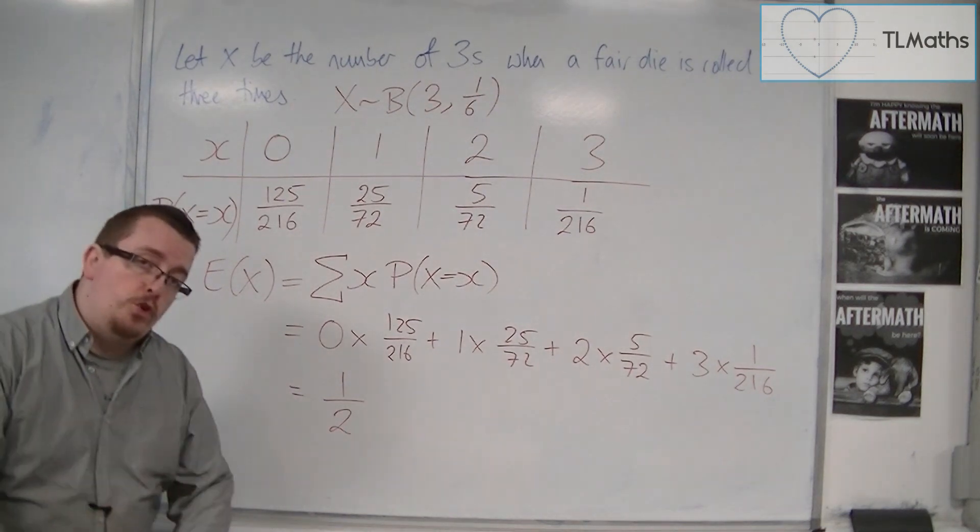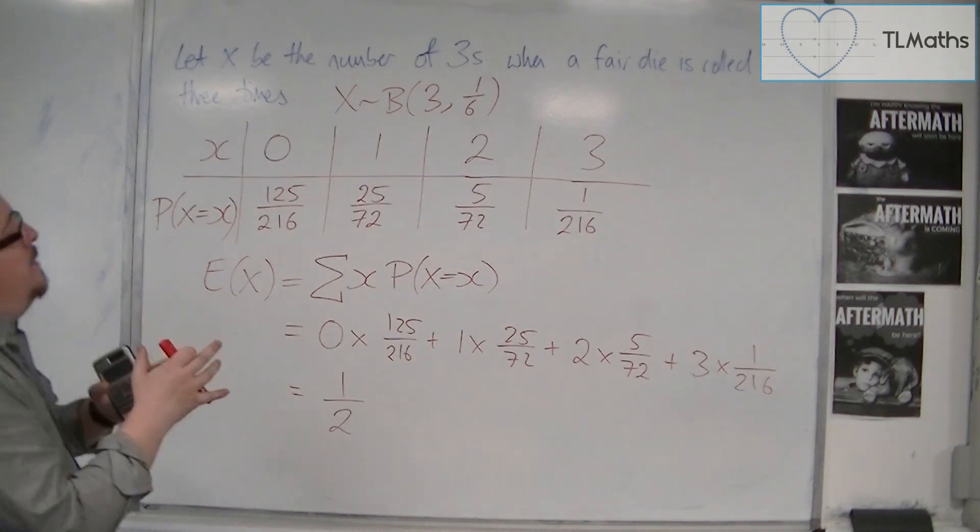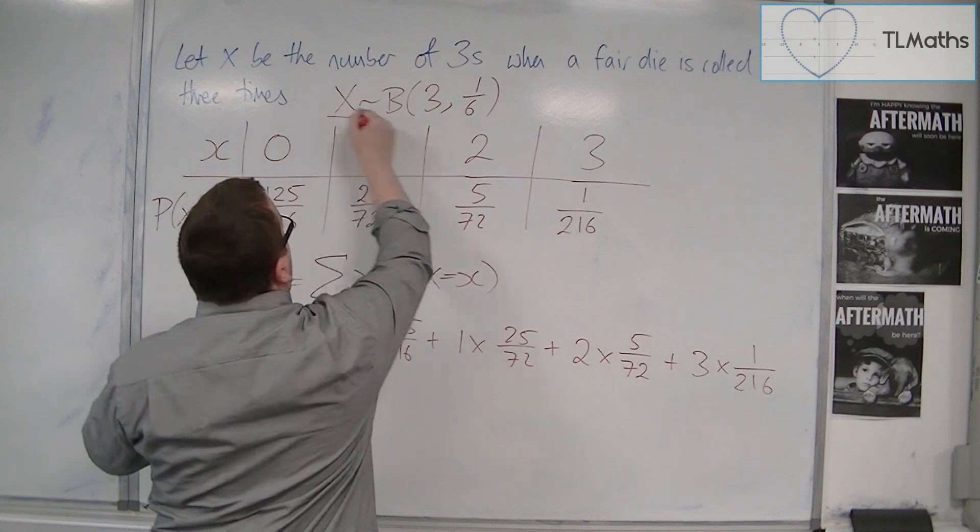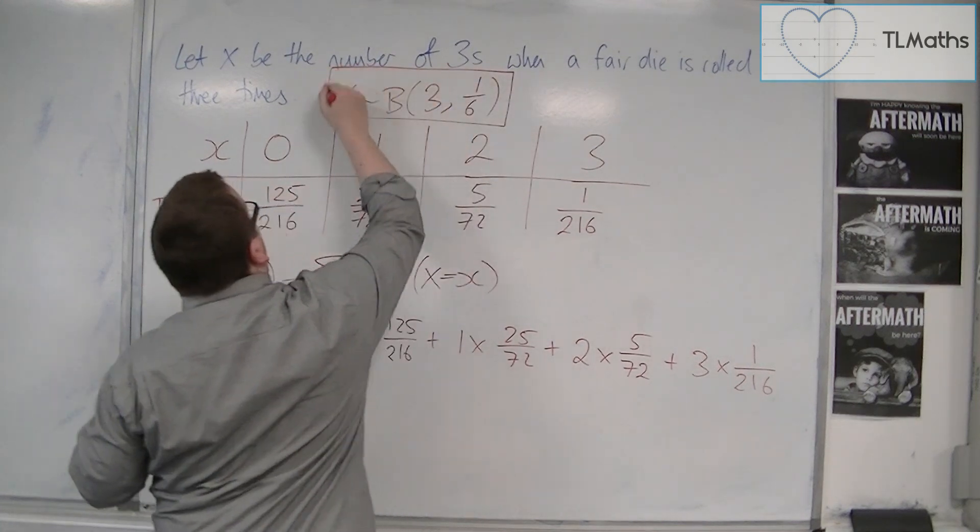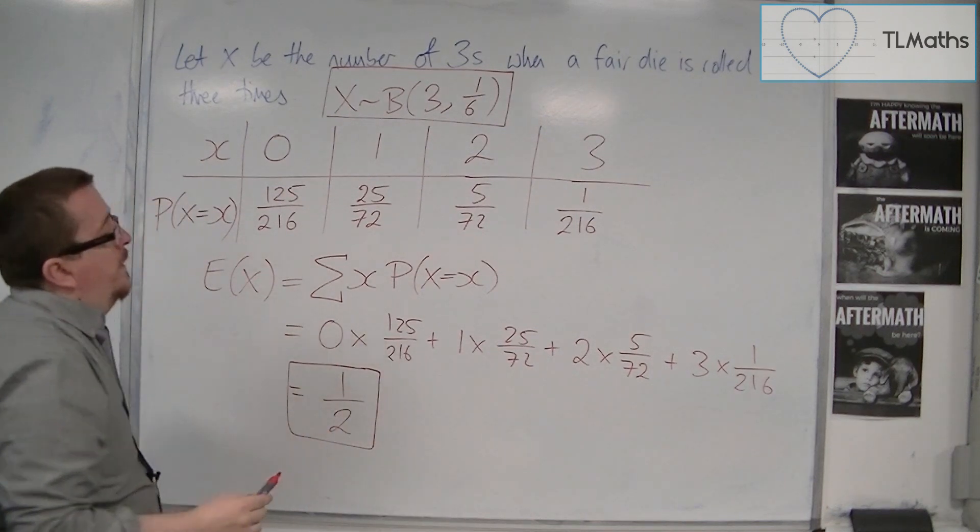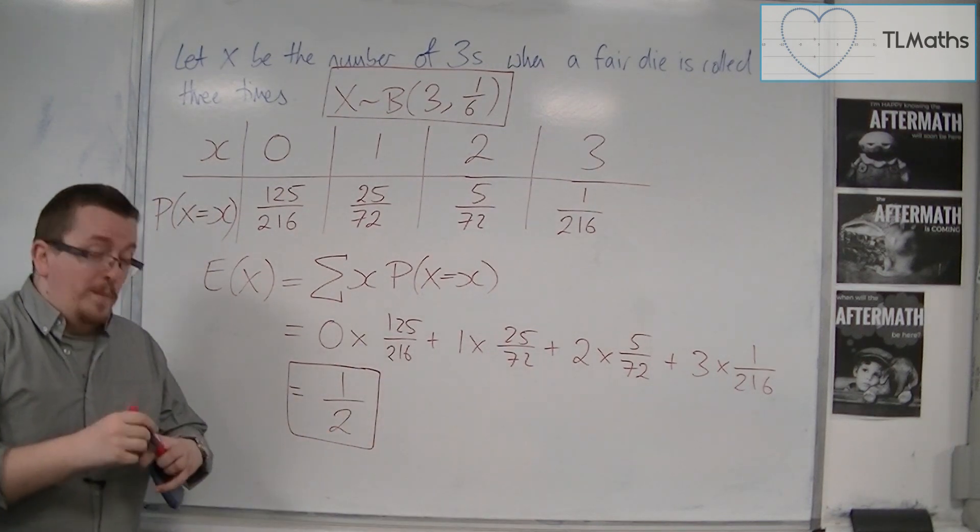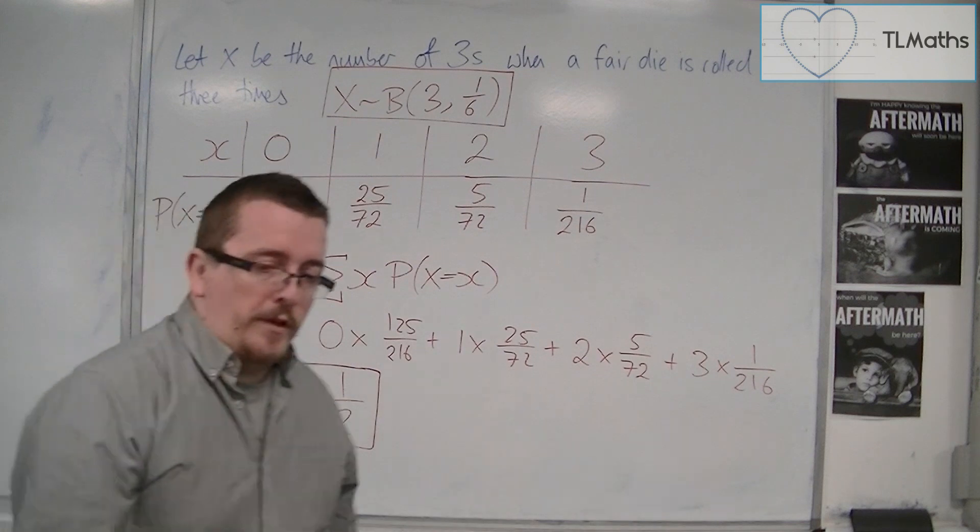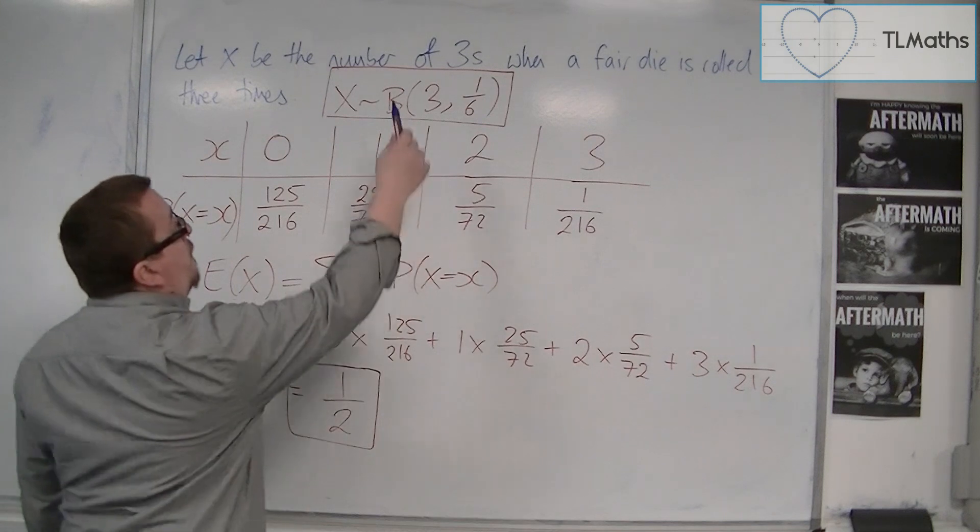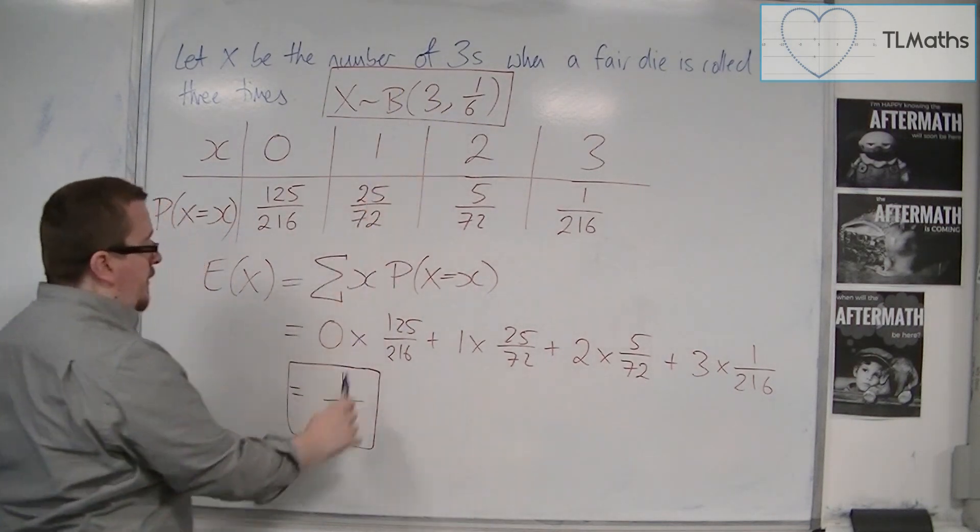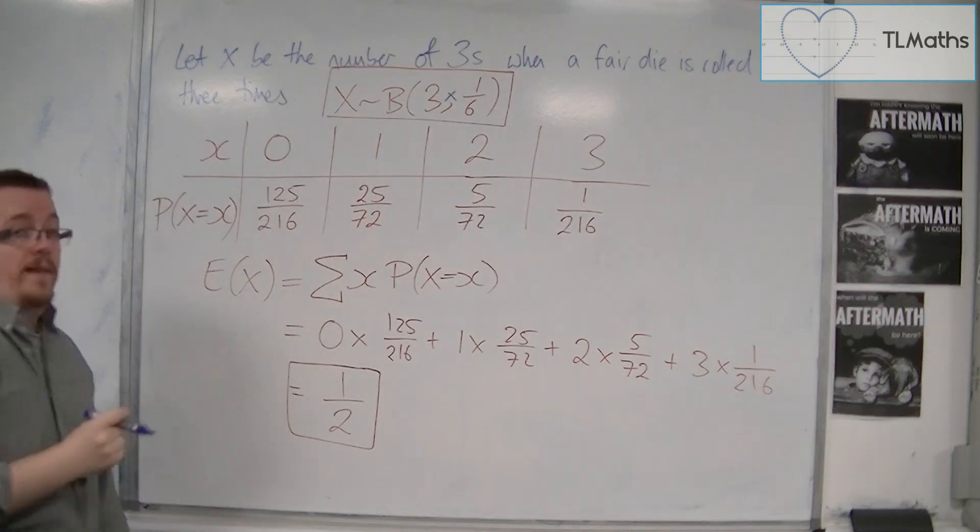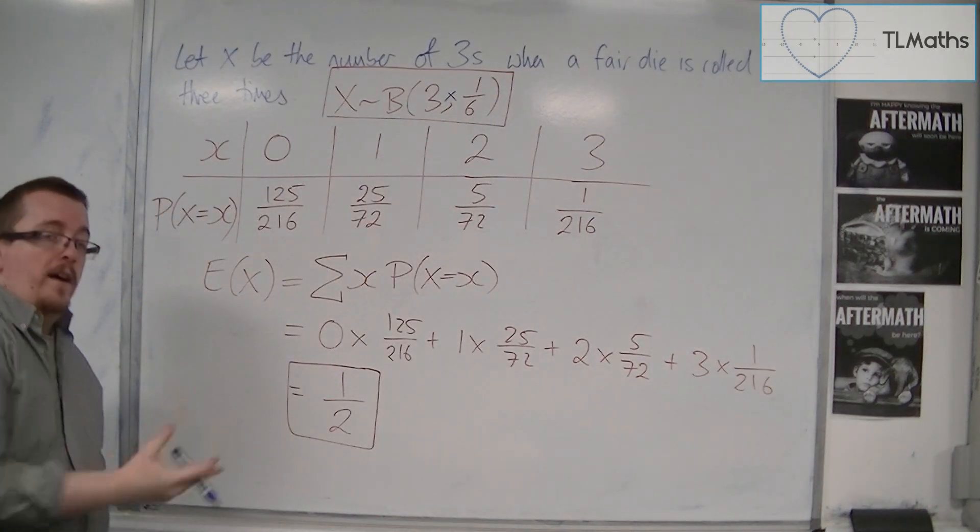However, is there a shortcut? Is there a way to go directly from this stage here to getting a half? So, in actual fact, to get from the 3 and the 1 sixth to a half, you could just multiply the 3 and the 1 sixth together, and you get a half.